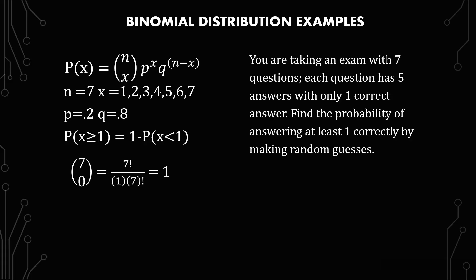So 7 choose 0 is 7 factorial over 1 times 7 factorial, which gives us 1. The probability of 0 is 1 times 0.2 to the 0 times 0.8 to the 7th, or 0.2097152. So just a reminder, don't round at this point,